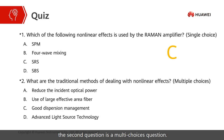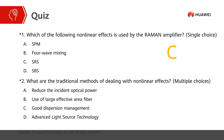The second question is a multi-choice question: what are the traditional methods of dealing with non-linear effects? A. Reduce the incident optical power. B. Use large effective area fiber. C. Good dispersion management. D. Advanced light source technology. The answer is obviously ABCD.